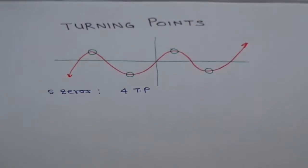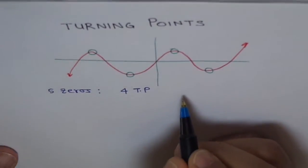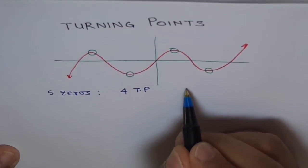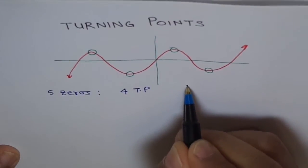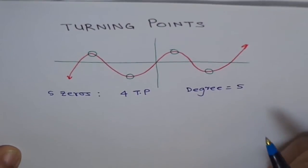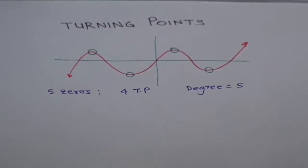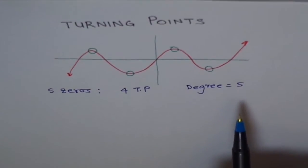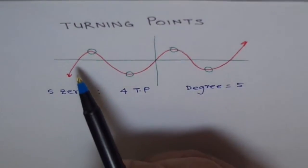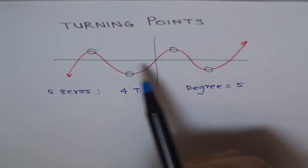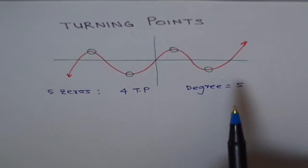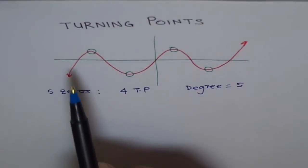So what is the degree of this polynomial? The degree has to be 5 because these seem to be linear zeros. Do you see how the polynomial cuts the graph linearly? Like a straight line. So these are all linear zeros — they come from linear factors.